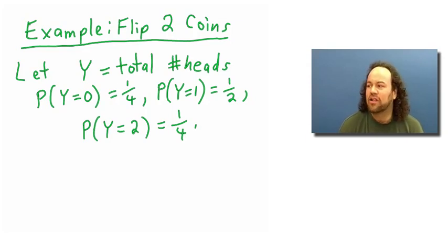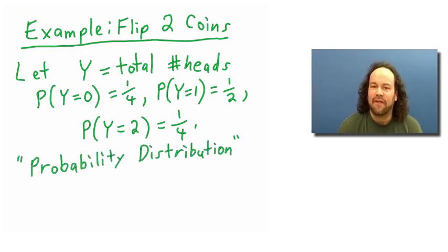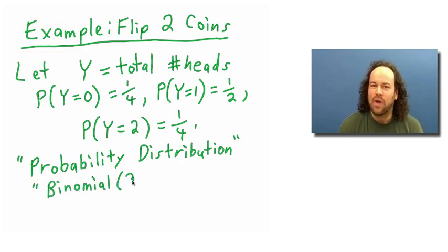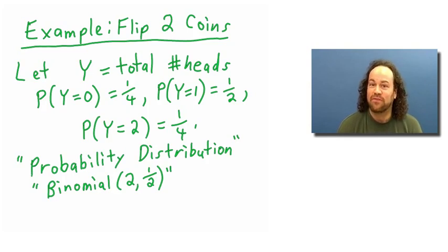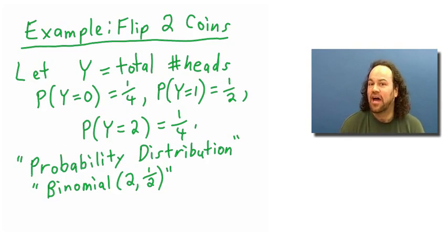This is called a probability distribution. In this case, it's called the binomial(2, 1/2) distribution — a particular name meaning we did two experiments, flipping the coin twice, and the probability of success or a head each time was equal to a half.